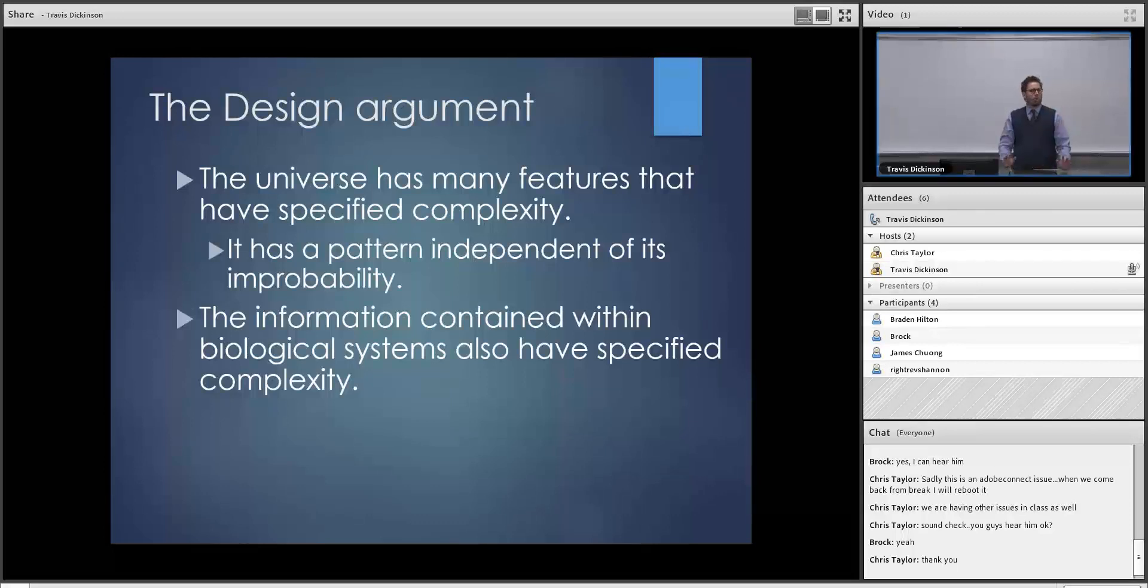And then we're looking at the world and saying, how could this world have come to be the way that it is? With this pattern, namely us, human life. Any questions on specified complexity? I just wanted to make sure you get it.